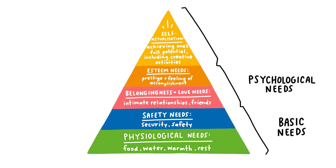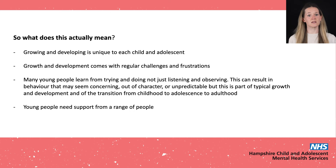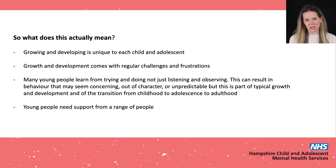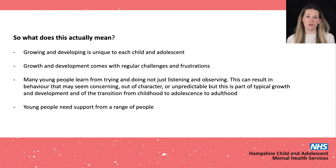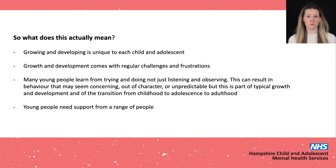For example, for some the need for self-esteem is more important than the need for love. However, it is a useful model to hold in mind when considering child and adolescent development, particularly in relation to behaviour, as behaviour is often motivated by the desire to have needs met. We also know that mental and emotional health can suffer when some of the basic and psychological needs are not met. Growing and developing is unique to each child and adolescent, but for every individual it's hard work. Thriving is not inevitable — growth and development comes with regular challenges and frustrations. Development is associated with learning, and many young people learn from trying and doing, not just listening and observing, so they need those opportunities. This can result in behaviour that may seem concerning, out of character or unpredictable, but this is part of typical growth and development and the transition from childhood to adolescence and from adolescence to adulthood.